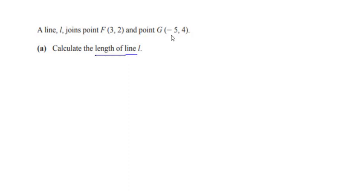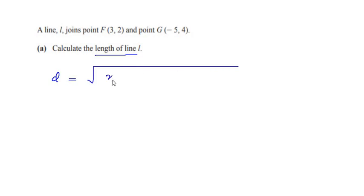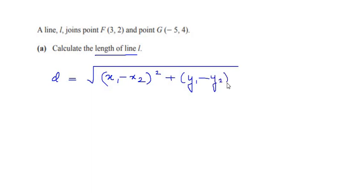The distance formula is given as d = √[(x1 - x2)² + (y1 - y2)²]. Here they have given us F as (3, 2) and G as (-5, 4).